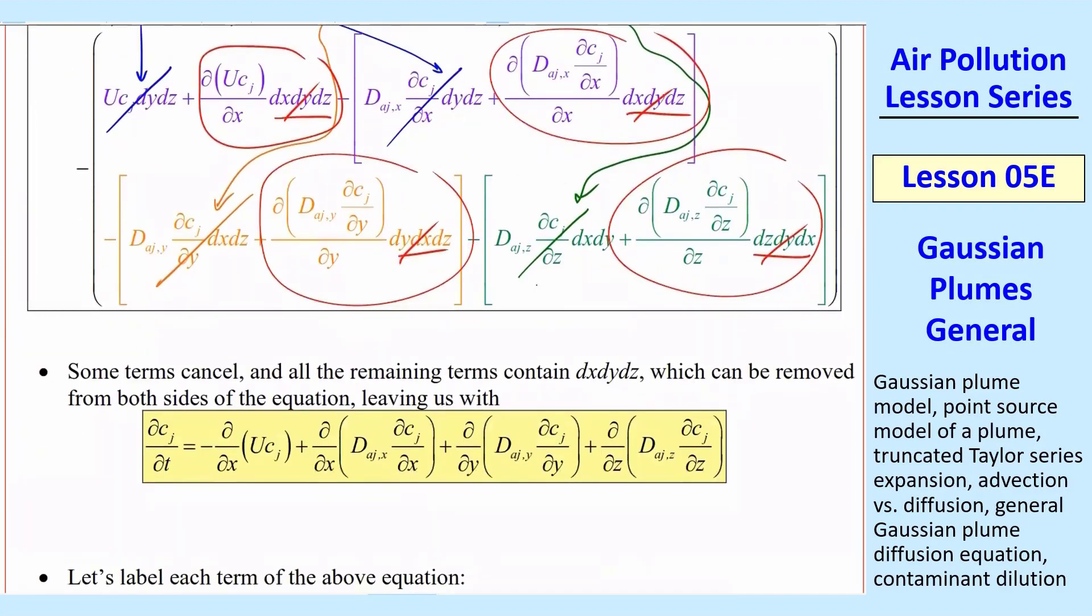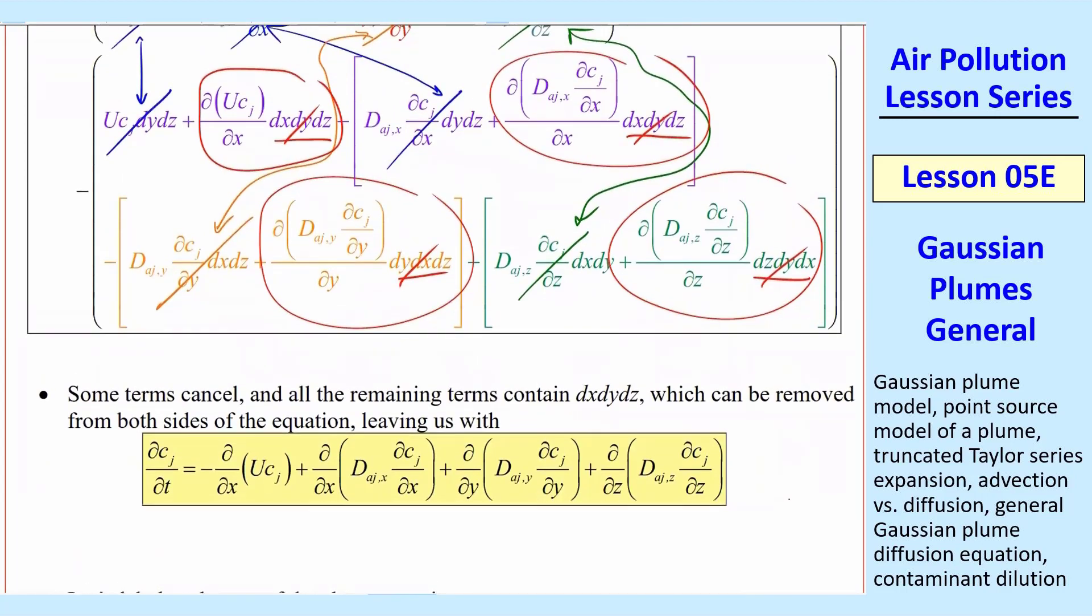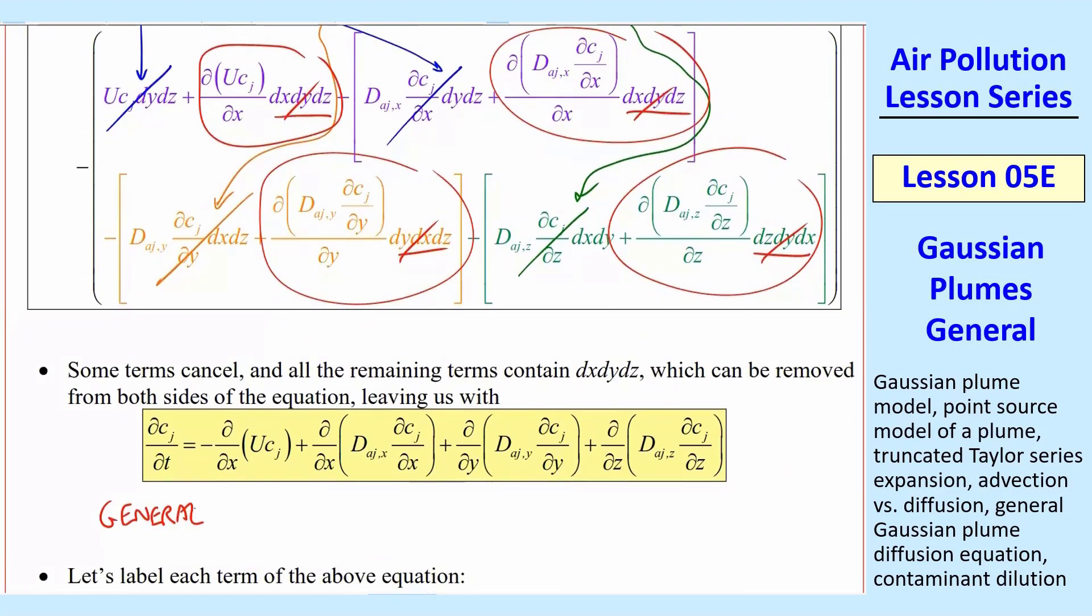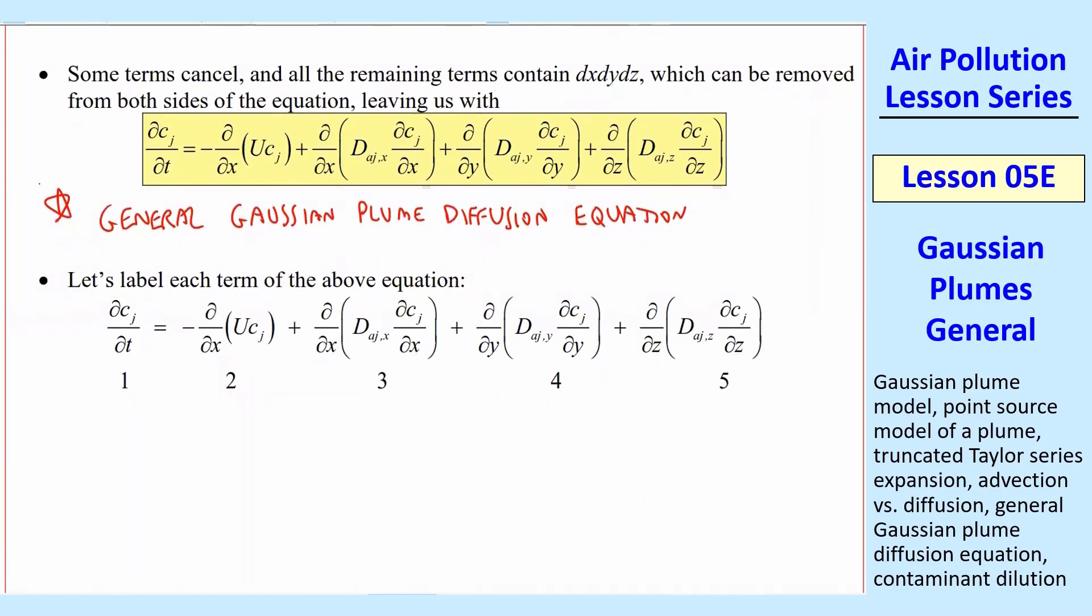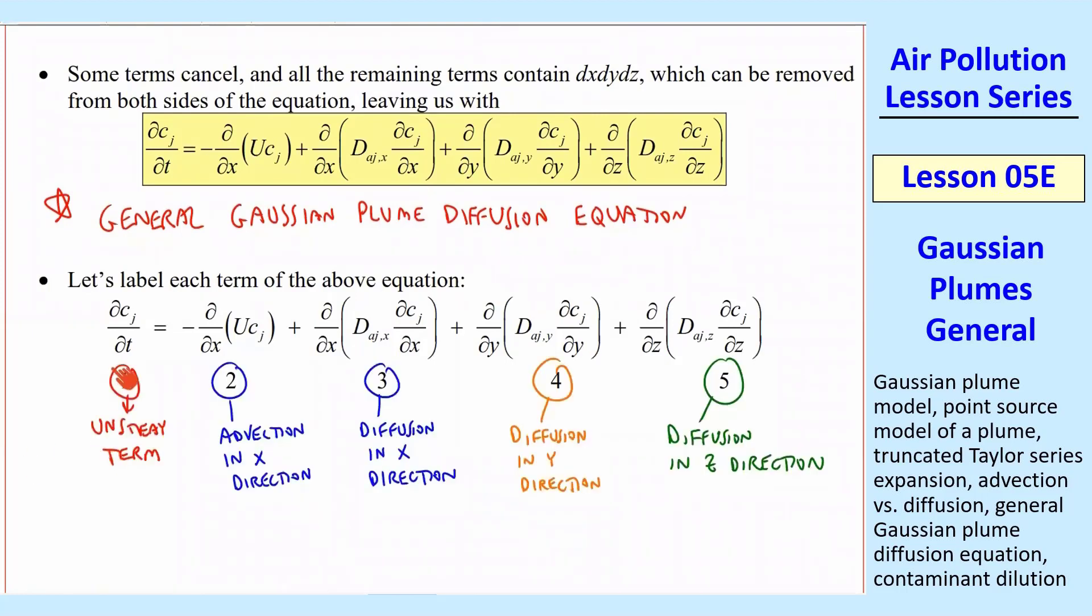When you finally write it all out, that huge equation reduces to this, which is much cleaner. So this is the final equation we have. We're going to call this the general Gaussian-Plume diffusion equation. The last thing I want to do is just label each of these terms, and I want you to be able to look at this and know what these terms are called. So let me just label these. The first term is the unsteady term. That one's going to go away when we assume that it's steady, which we'll do next lesson. Advection in the x-direction. Term 3 is diffusion in the x-direction. Term 4 is diffusion in the y-direction. And term 5 is diffusion in the z-direction. So next time, we're going to actually reduce this equation to be a little bit even simpler, and then we'll be able to solve it.